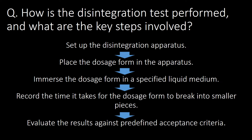How is the disintegration test performed and what are the key steps involved? Following are the five key steps: first, set up the disintegration test apparatus; second, place the dosage form in the apparatus; third, immerse the dosage form in a specified liquid medium; fourth, record the time it takes for the dosage form to break down into smaller pieces; and the final step, evaluate the results against predefined acceptance criteria.